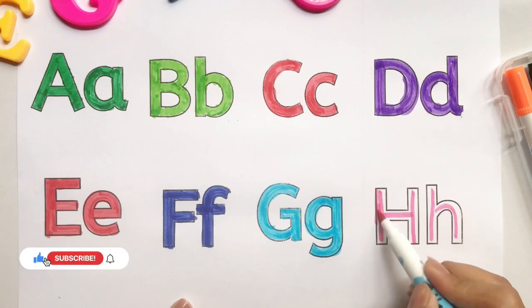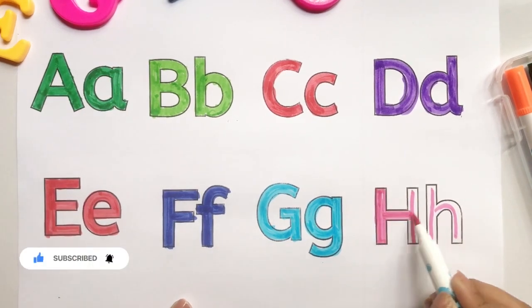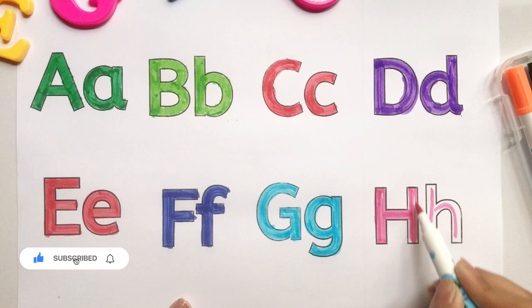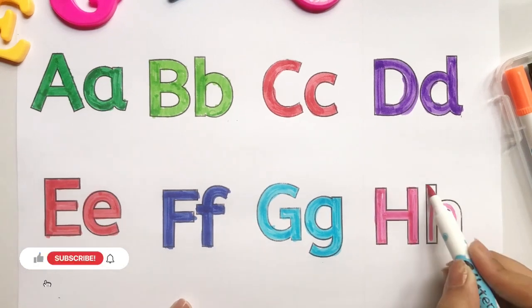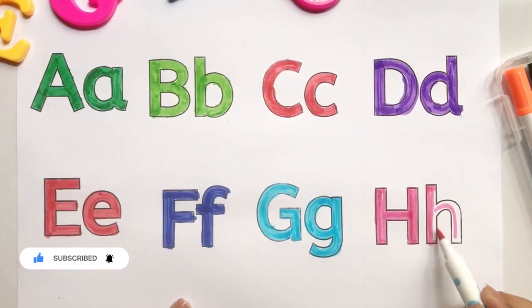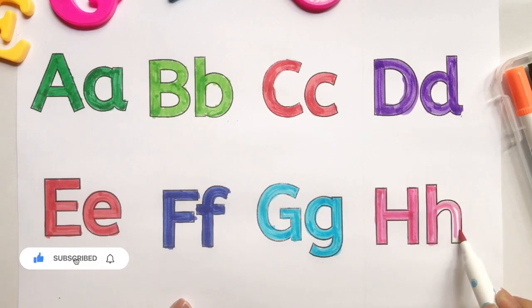Q, R, S, T, U, V, W, X, Y, Z. Now I know my ABCs. Next time won't you sing with me.